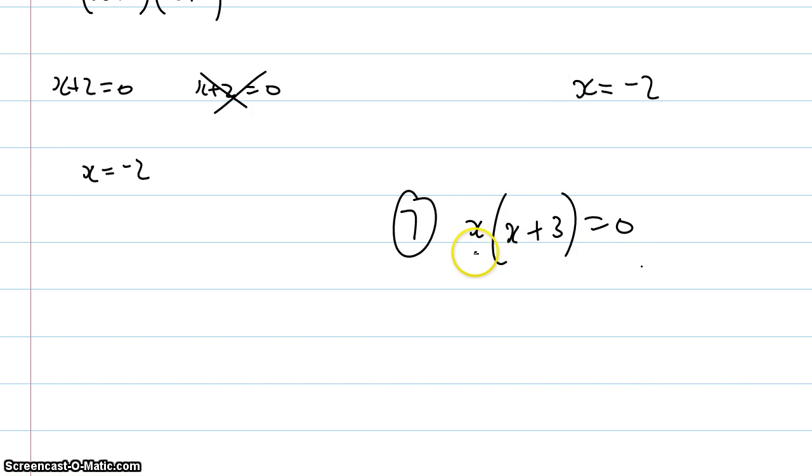Again we can still use the null factor law for this one, so it can sometimes be a little bit of a trick and people get confused. It means that x equals 0 or x plus 3 is equal to 0. So we still get our two answers. It just looks a little bit different than what we've done before but essentially it's the same kind of idea.